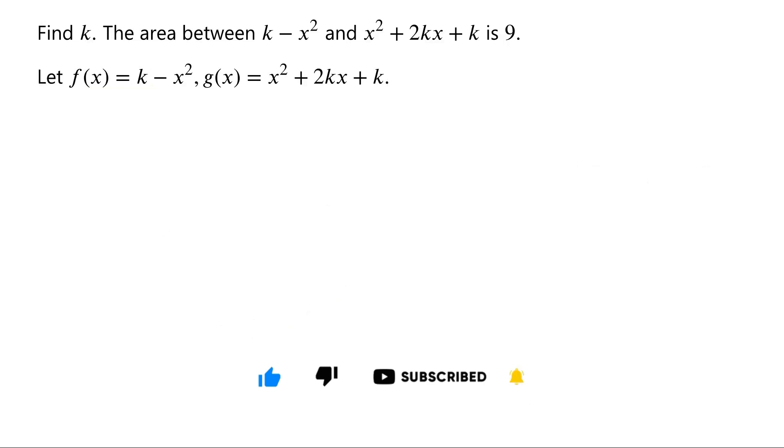If a and b are the x coordinates of the points where f of x and g of x intersect, then from the given condition we know that the integral of f of x minus g of x dx from a to b is equal to 9. To find a and b, we let f of x equal g of x.